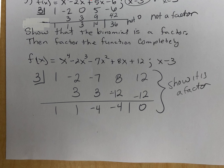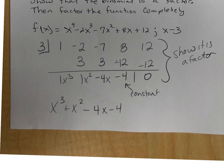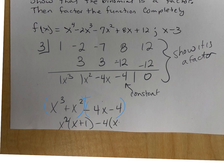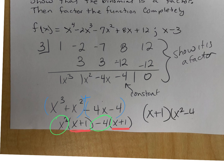Now I have my constant, my x, x squared, and x cubed: x cubed plus x squared minus four x minus four. With four terms, we factor by grouping. Group the first two together: x squared comes out of x cubed plus x squared, giving x squared times (x plus one). Take out negative four from the last two: negative four times (x plus one). Then factor out (x plus one), leaving (x squared minus four). And x squared minus four is the difference of squares, so it factors as (x plus 2)(x minus 2).